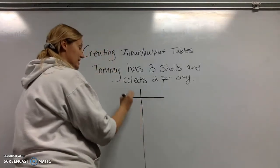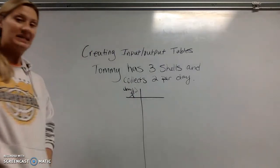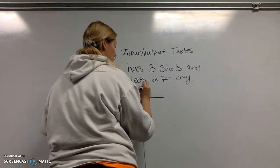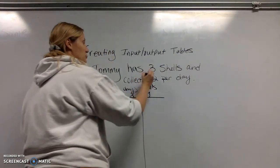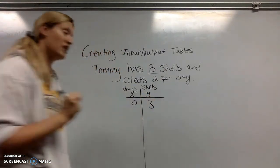So, my input is actually going to be number of days. So my X is how many days have passed, what's the time, and my output is going to be the number of shells that he has. So if 0 days have passed, remember, he starts with 3 shells. So he has 3 shells.